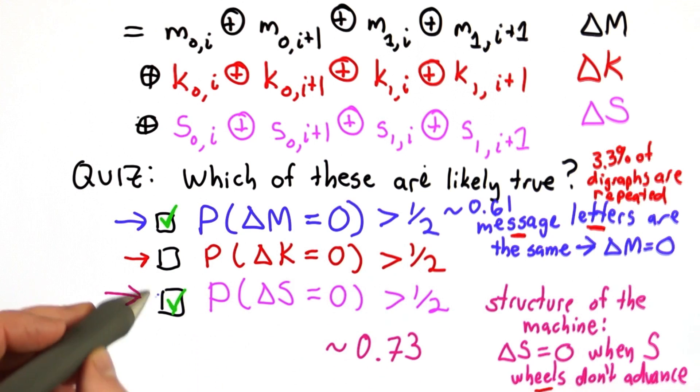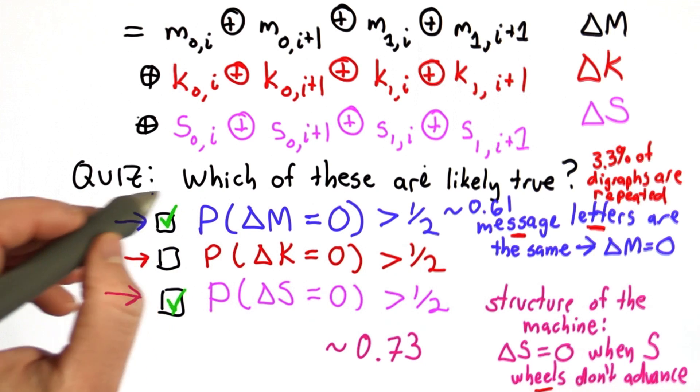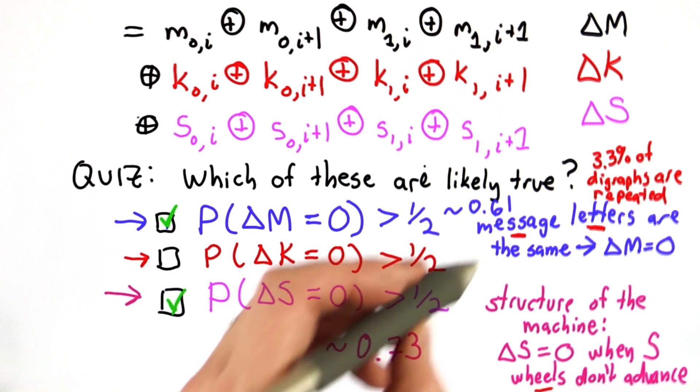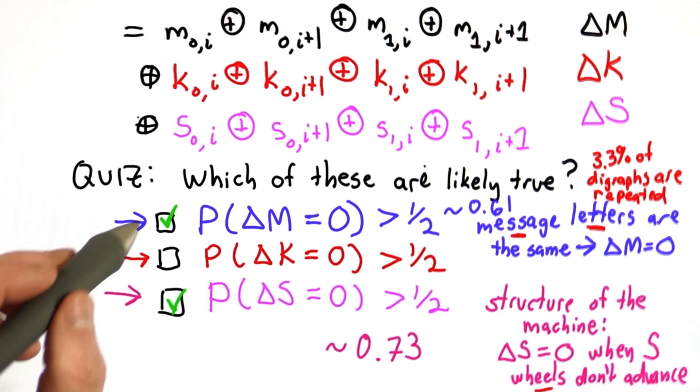Although the structure of the machine should have been enough to guess that this is greater than 1/2. And if you are familiar with German or could guess that it has properties similar to English, you might have been able to get this one as well.